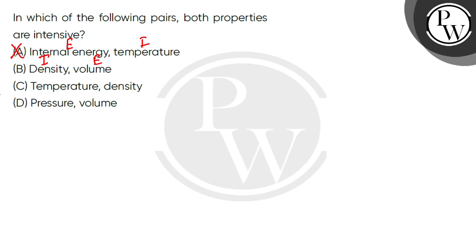Option C has temperature and density. Temperature is an intensive property and density is an intensive property, so this option is correct.